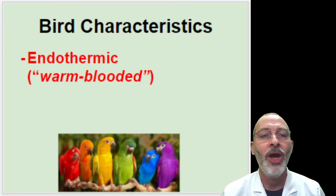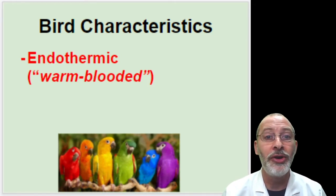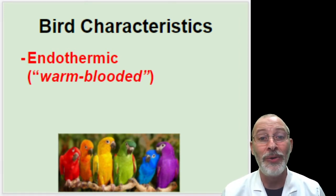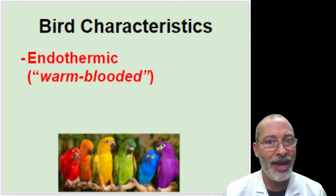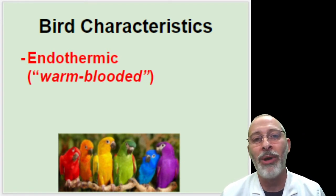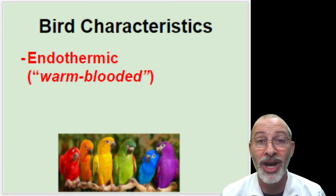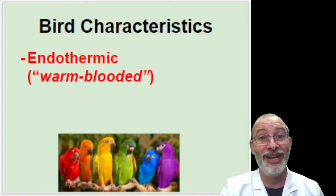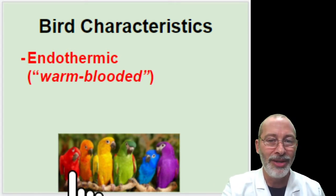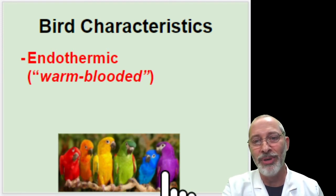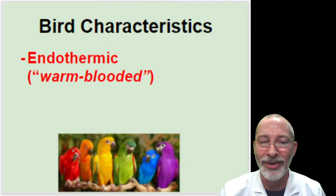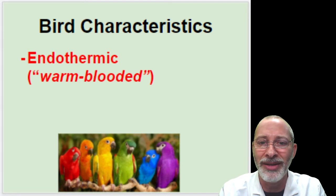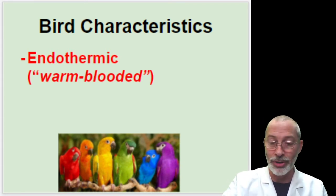Birds are endothermic. We know from a couple of days ago what that word means — endothermic, also known as warm-blooded. They regulate their body temperature internally, just like us. Unlike us, they can fly — without an airplane, I mean. Here's another cool picture. I love the colors of the rainbow — Roy G. Biv. I'm not sure if those are photoshopped or authentic parrots, but I think that's a pretty cool picture.